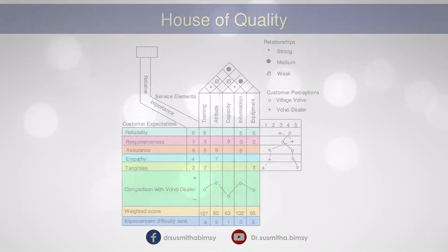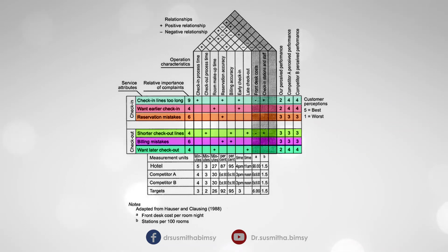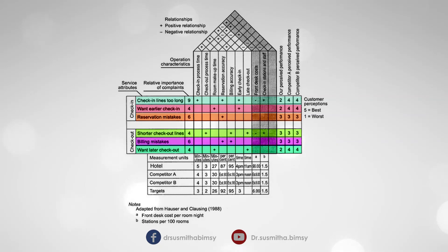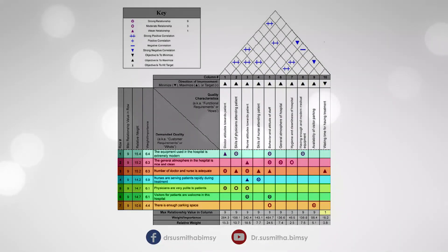Two more examples are provided for better understanding. The first is a house of service quality for a hotel. On the far left are service attributes, next to which is the relative importance column; the columns of the house represent operational characteristics, the roof shows the relationships among them, and the body of the matrix represents the strength of relationships between service attributes and operational characteristics. Similarly, there is a house of service quality for a hospital, showing customer requirements and quality characteristics — the functional requirements.